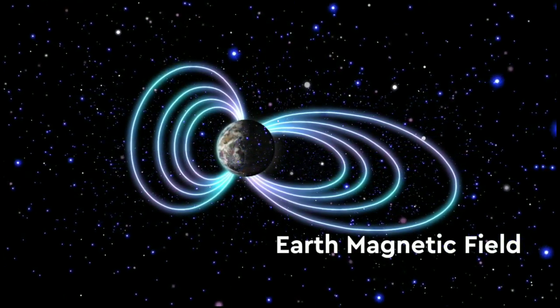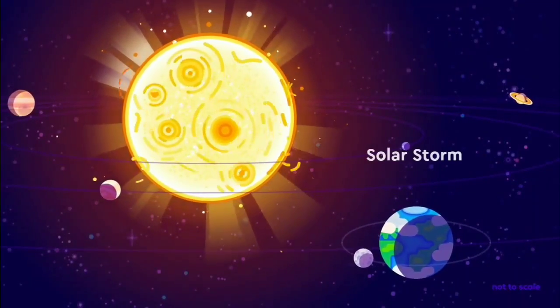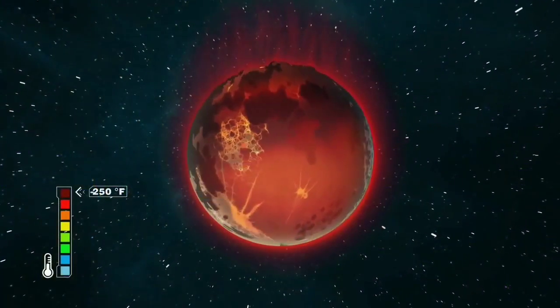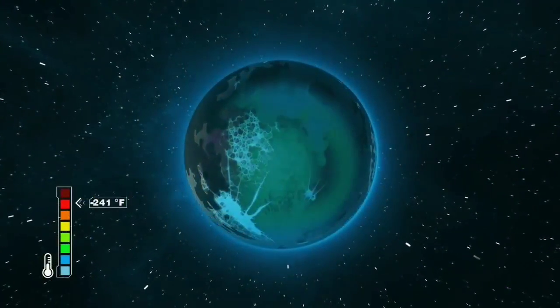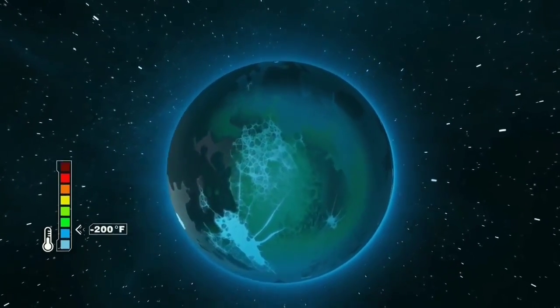The magnetic field is a literal force field capable of stopping and deflecting the solar wind, which is a never-ending stream of high-energy particles blasting out of the sun. When Mars cooled off, its core solidified and its magnetic force field shut off, exposing its atmosphere to the ravages of the solar wind.